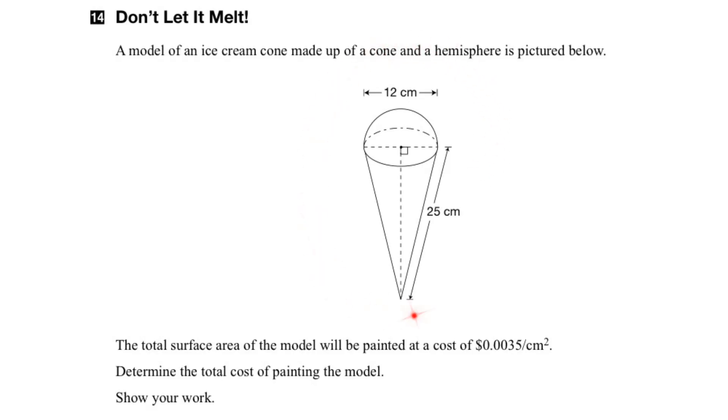In this question we are given a composite shape which is made up of half a sphere and a cone, and together they represent an ice cream cone.